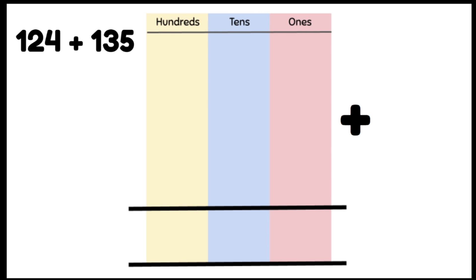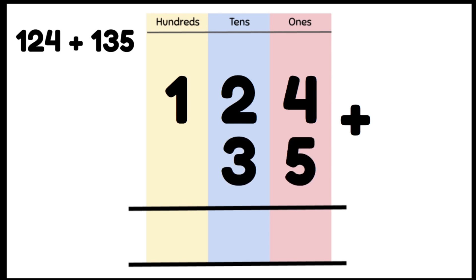Let's have a look at a problem together, 124 plus 135. Now laying out is very important when we're doing our column method. We're putting our ones in the ones column, our tens in the tens and our hundreds in the hundreds, making sure it lines up perfectly with the number below.